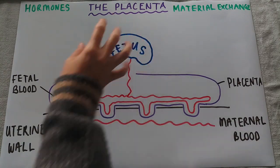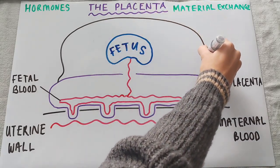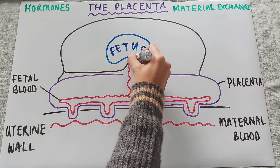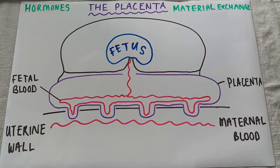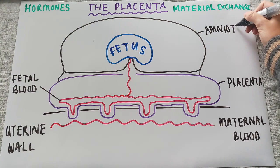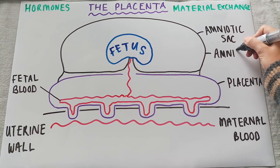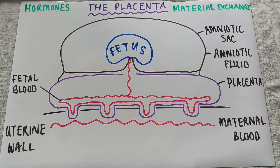The fetus is not just left on its own — it's cocooned in a cushion called the amniotic sac. The amniotic sac contains amniotic fluid, which is there to provide support and protection for the baby. The amniotic sac is there to contain that amniotic fluid.